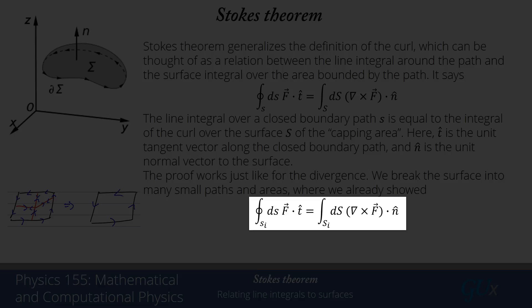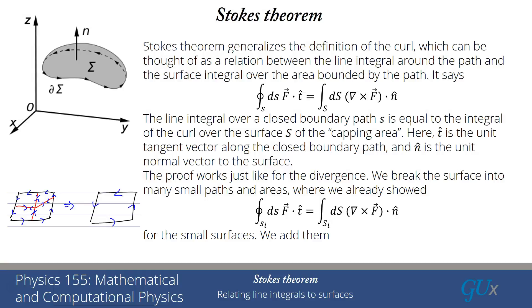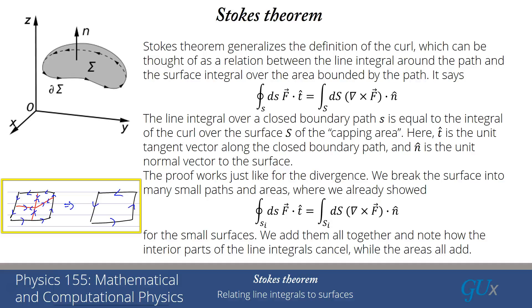When we do that, we have to add up all the patches. When we add up the patches for the line integrals, all the interior paths cancel, as shown in the figure on the left. I'll be going down one of those interior lines in red in one direction and then going up in the other direction, so those integrals will always cancel.